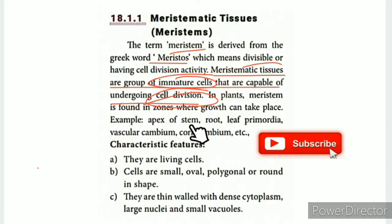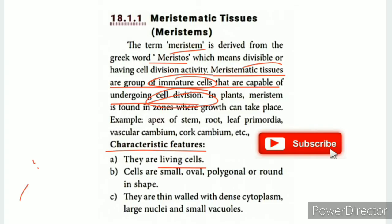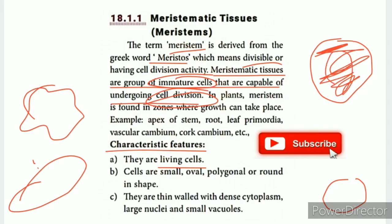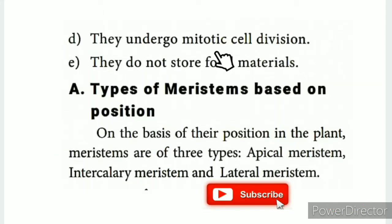Meristematic tissue is found at the apex of stem and root, leaf primordia, vascular cambium, and cork cambium. The characteristics of meristematic cells are: they are living cells, small in size, oval in shape, with very thin and dense cytoplasm. They undergo mitotic cell division and do not store food materials.